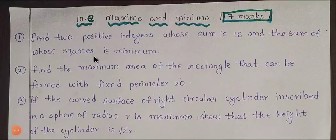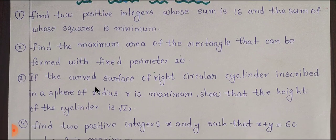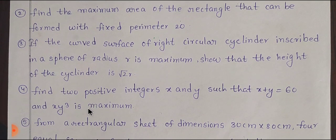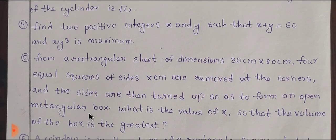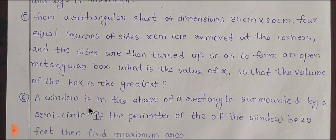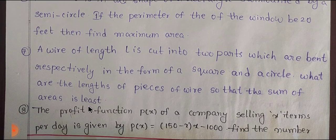The next topic is maximum and minimum. Here you have a little essay-type question, but it is easy to prepare. Problems 1, 2, and 3 are straightforward. The fourth, fifth, sixth, and eighth problems are more challenging. Let's go to the next page for the long answers.